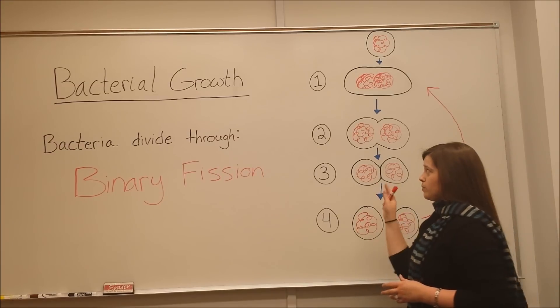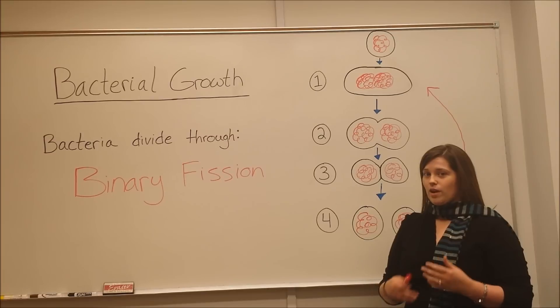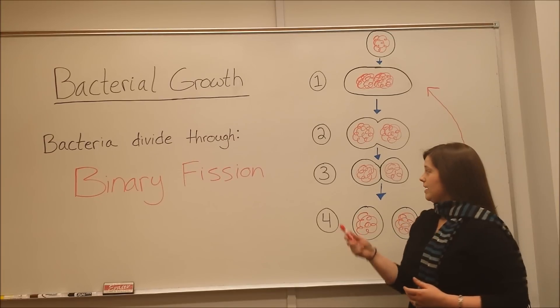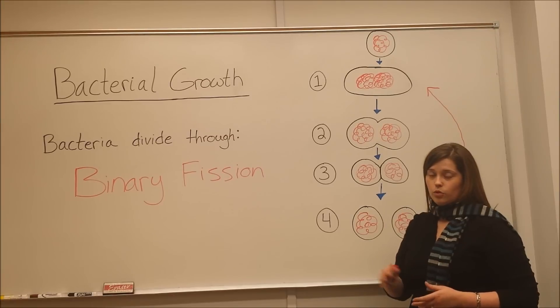Some bacteria can go through this process very, very quickly. In fact, E. coli has a generation time of only about twenty minutes, which explains why it's able to divide so quickly and reach that logarithmic growth phase.